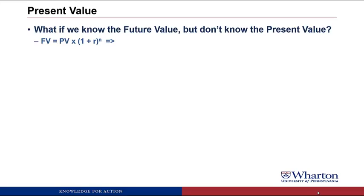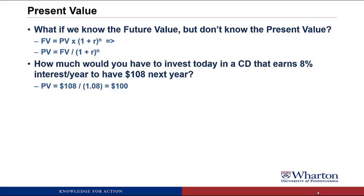Let's dive in and see how we would calculate present values. If we know the future value of something but we don't know what the value is today, what's the present value? We saw in the last video that future value equals present value times 1 plus the discount rate raised to the n power, where n is the number of periods. Using algebra, we can rearrange this so that present value equals future value divided by 1 plus the discount rate raised to the nth power. For a concrete example: how much would you have to invest today in a CD earning 8% per year to have $108 next year? The present value equals $108 divided by 1.08, giving you $100. There's no exponent because it's raised to the 1st power.